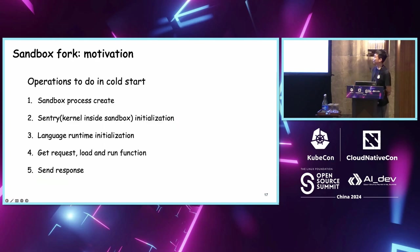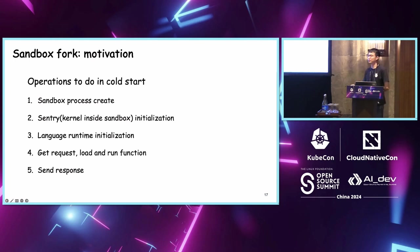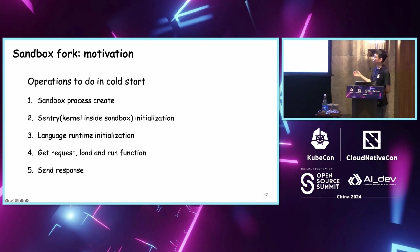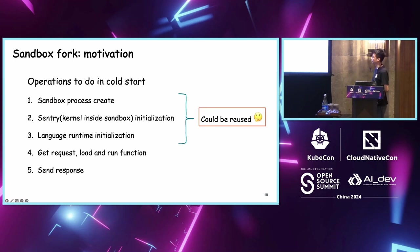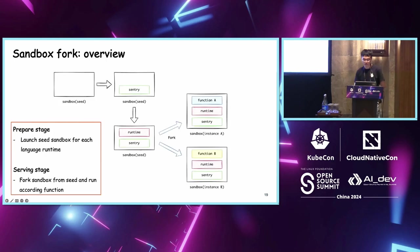The final and most important part is sandbox fork. In cold start, we have to: first, create a sandbox; second, initialize the guest kernel Sentry; third, initialize the language runtime like Node.js or PHP; and finally, get the request, load, and run the function, then send a response. In warm start we skip steps one through three. So is there any way to reuse these three steps? Fork can do this.